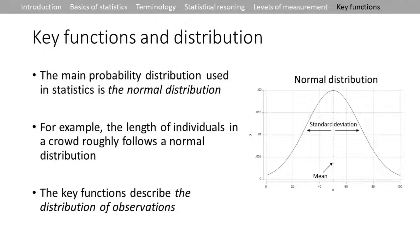The key functions describe the distribution of observations. For example, we have the mean, located right at the center of the normal distribution, and the standard deviation — you can see the distribution line — which tells us how much variation there is: are there more shorter or taller people, and is the peak higher or lower?